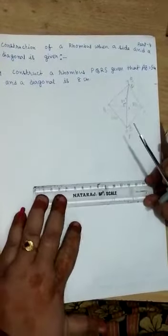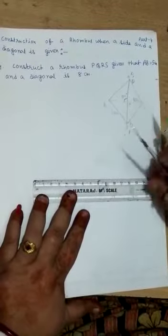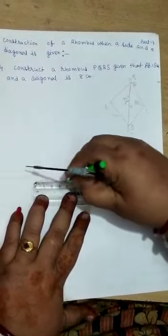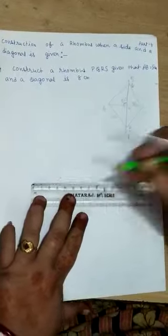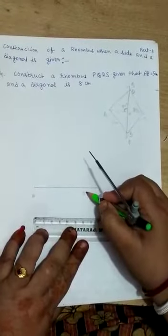First, you draw an 8 cm line segment. Name of the line segment is AC. AC 8 cm.